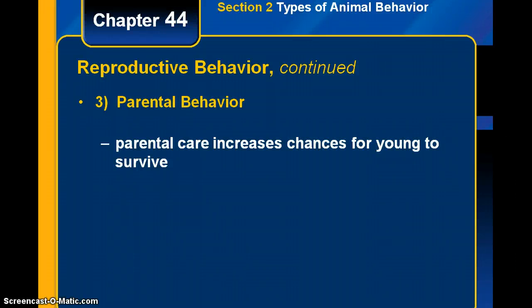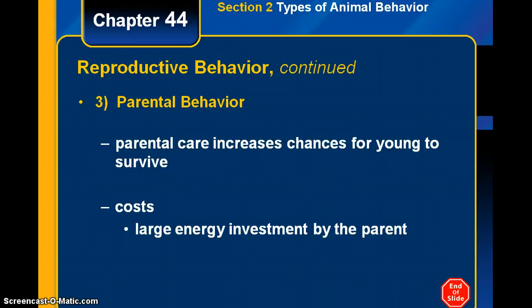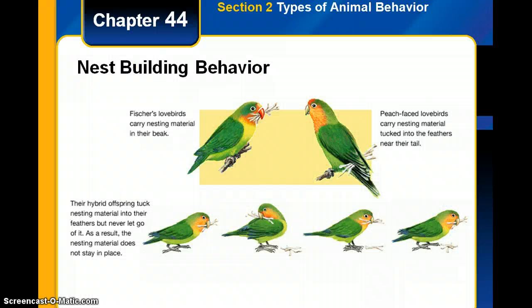The third type of reproductive behavior is called parental behavior — how much time do parents invest, and do they abandon their young after birth? Parental care increases the chances for young to survive, but there are costs: a large energy investment, protecting offspring, searching for food, and providing shelter.